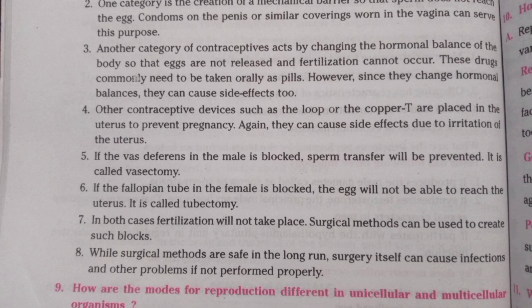If the vas deferens in the male is blocked, sperm transfer will be prevented — this is called vasectomy. If the fallopian tube in the female is blocked, the egg will not be able to reach the uterus — this is called tubectomy. In both cases fertilization will not take place. Surgical methods can be used to create such blocks.